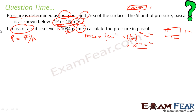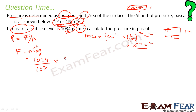Mass is 1034 grams. Force is mass × gravity, where mass must be in kg. So I convert: 1034 grams ÷ 10³ gives kg, then multiply by g = 9.8 m/s². So force = (1034 / 10³) × 9.8 Newton.